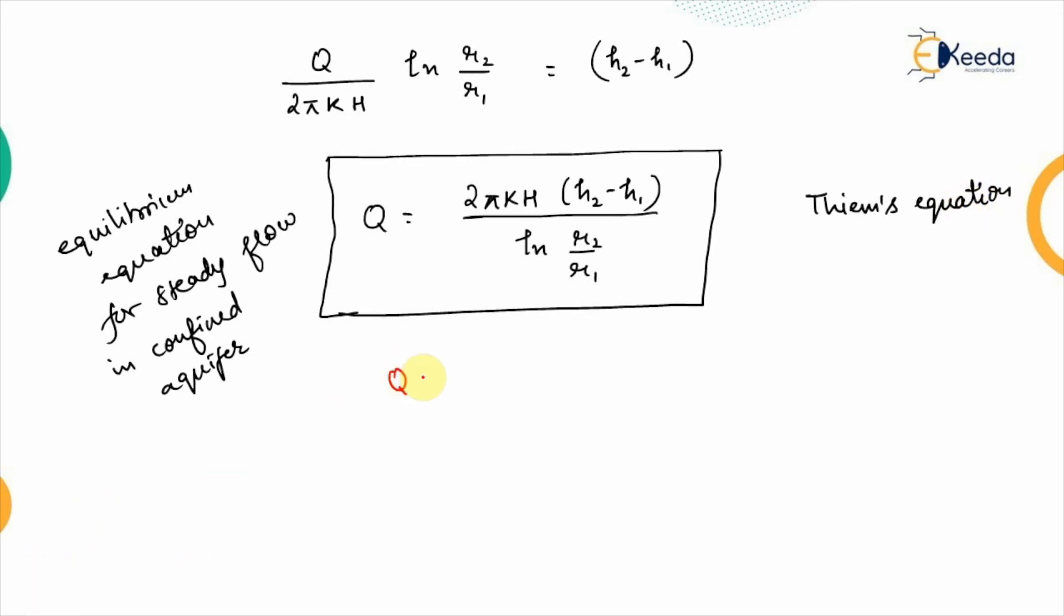So, that is also written as q is equal to 2πkh h2 minus h1 upon this will be log base 10 so 2.303 log base 10 r2 upon r1. This can also be written in this form.